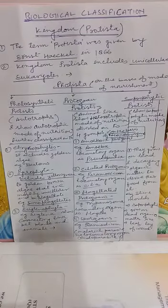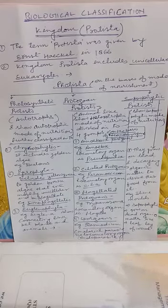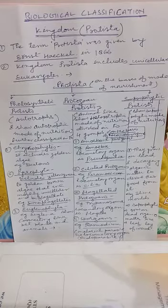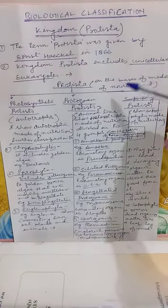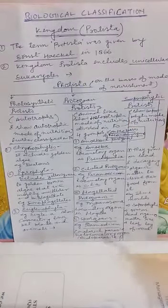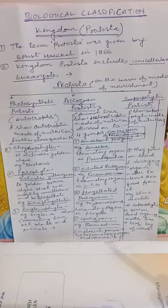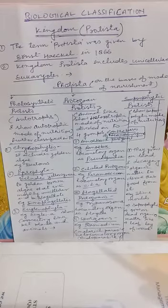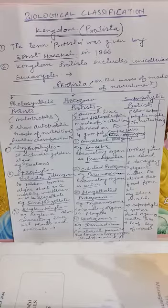Hello children, in my previous lecture we discussed about Kingdom Monera. Today we will be talking about Kingdom Protista. The term Protista was proposed by scientist Ernest Haeckel in 1866. Kingdom Protista includes unicellular eukaryotes, meaning they have all membrane-bound structures like mitochondria, Golgi body, and endoplasmic reticulum, including a well-defined nucleus surrounded by a nuclear membrane. This is the main difference between prokaryotic and eukaryotic cells.